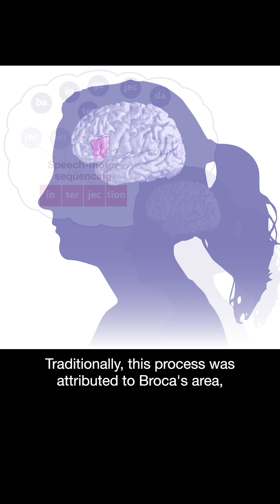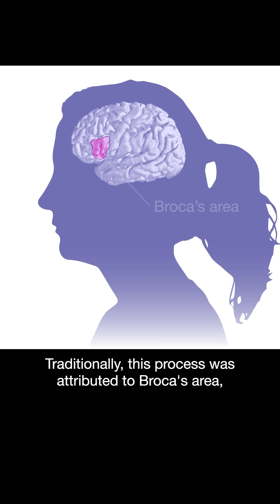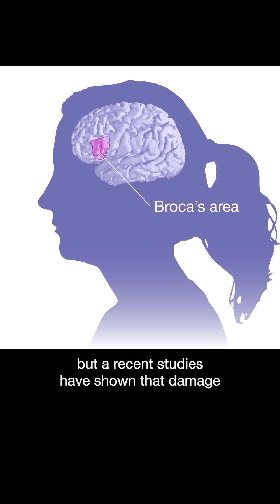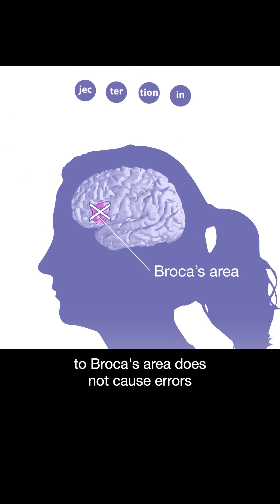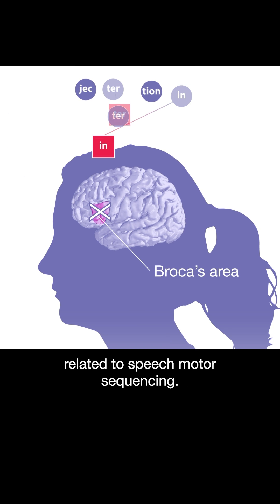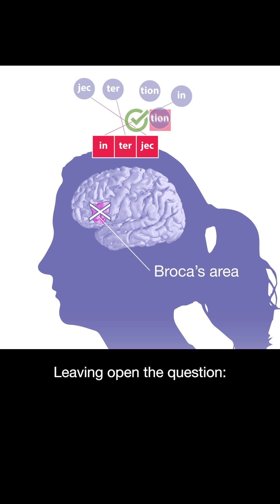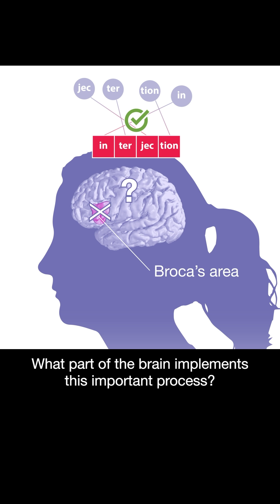Traditionally, this process was attributed to Broca's area, but recent studies have shown that damage to Broca's area does not cause errors related to speech motor sequencing, leaving open the question: what part of the brain implements this important process?